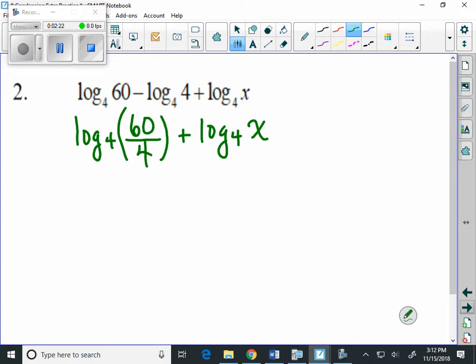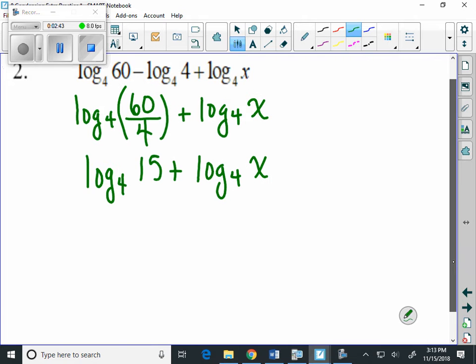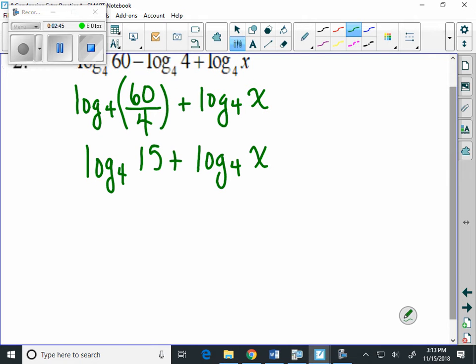We can figure out that 60 divided by 4 is 15, and then we have log base 4 of x. As we take a look at the fact that there's an addition between these two, addition equates to multiplication, and we end up with log base 4 of 15x.